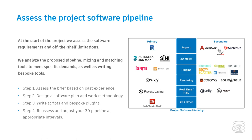Moving on to the software pipeline that we're using — at the start of the project and every project we work on, we assess the software and look at the off-the-shelf limitations of that software. We analyze our proposed pipeline, mixing and matching tools to meet our specific needs. We also aren't afraid of writing our own tools. Step one: we assess the brief based on past experience. We then design a software plan and work methodology, write scripts and bespoke plugins, and reassess every year or so that our pipeline is rock solid for that coming year.